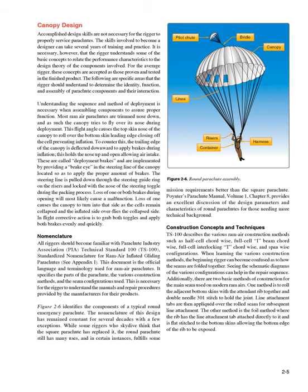Understanding the sequence and method of deployment is necessary when assembling components to assure proper function. Most ram air parachutes are trimmed nose down, and as such the canopy tries to fly over its nose during deployment. This flight angle causes the top skin nose to roll over the bottom skin leading edge, closing off the cell and preventing inflation. To counter this, the trailing edge is deflected downward to apply brakes during inflation, holding the nose up and open to allow air intake. These are called deployment brakes, implemented by providing a brake eye in the steering line located to apply the proper amount of brakes. Loss of one or both brakes during opening will most likely cause a malfunction. In-flight corrective action is to grab both toggles and apply both brakes evenly and quickly.